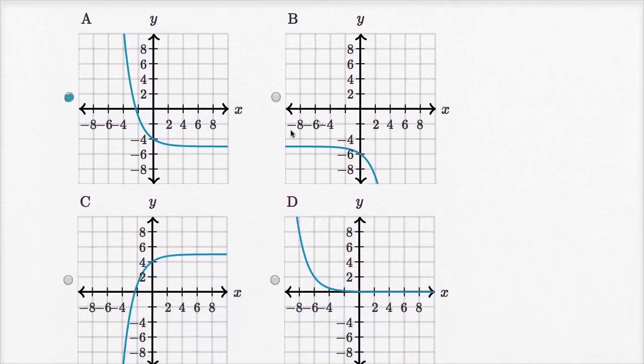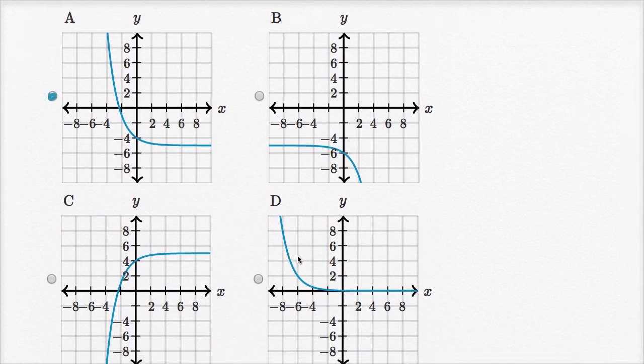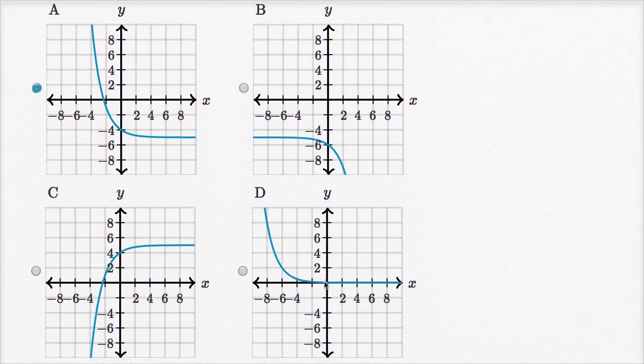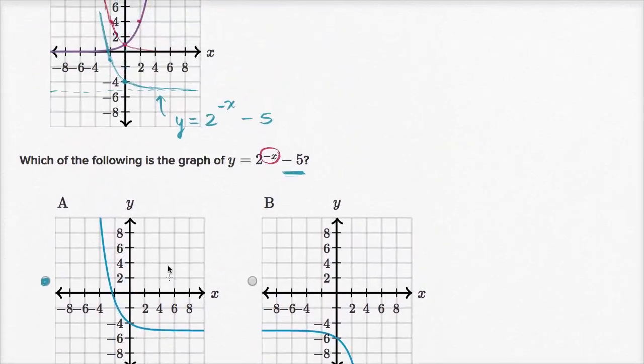Here it looks like they got what we got, but then they flipped it over the x-axis. And this looks like they flipped it over the y-axis, but then instead of shifting down by five, it looks like they shifted to the left by five. So we should feel pretty good, especially because we essentially drew this before even looking at the choice.